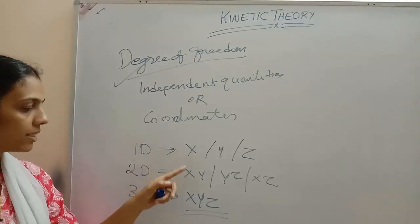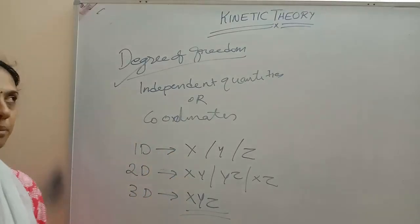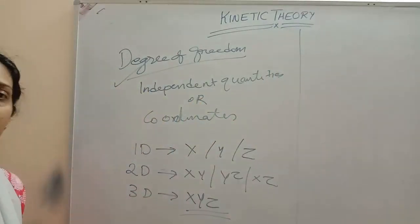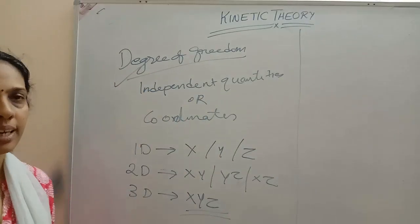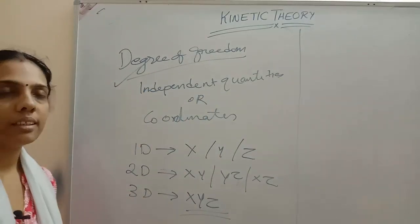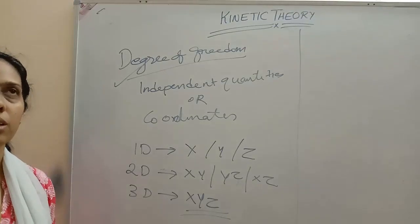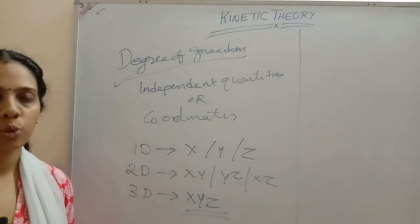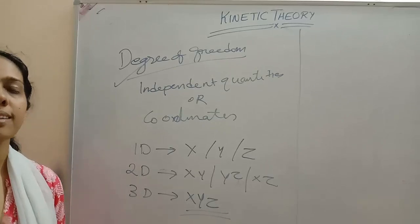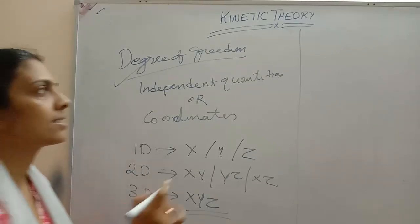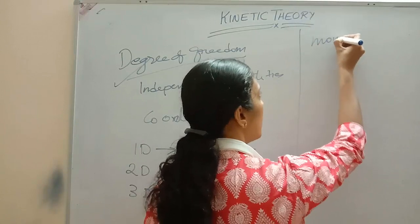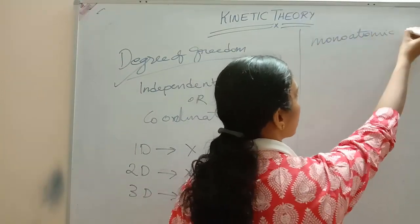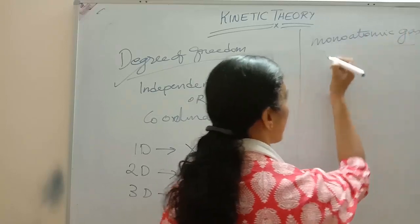For three-dimensional motion, all three coordinates are required to represent the system. This is called the degree of freedom. Now, how many degrees of freedom does a monoatomic gas have? Consider helium — it is a monoatomic gas existing as a single atom.